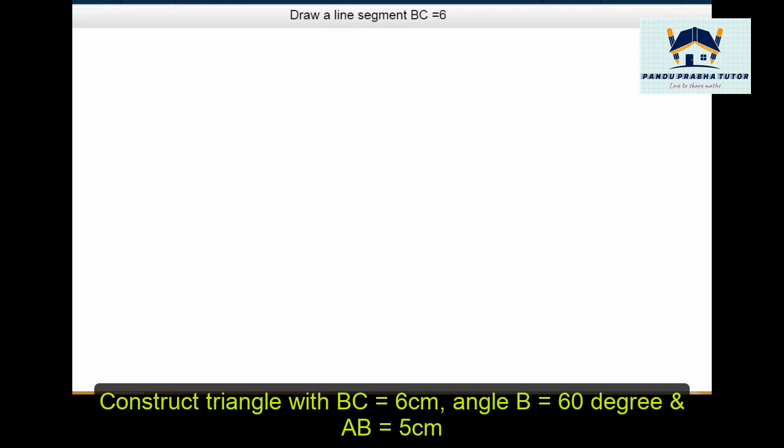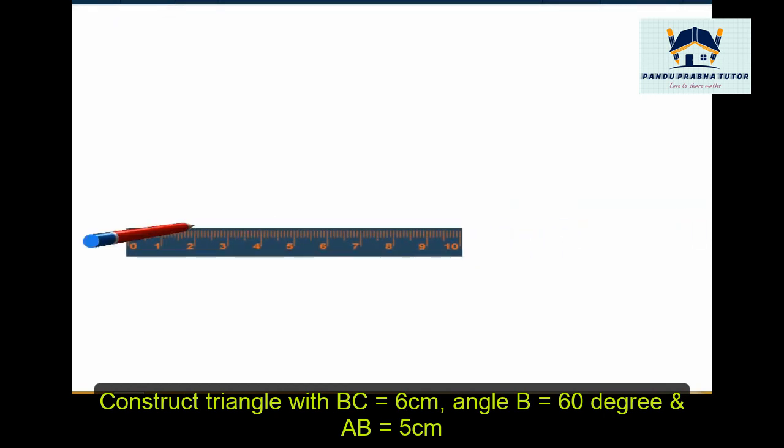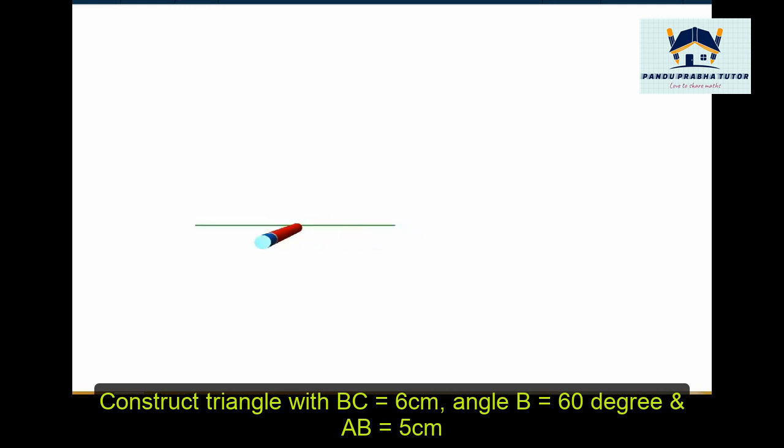Now, let us start constructing the triangle. Draw a line segment BC equal to 6cm, which is the base of the triangle. You can use AB also.